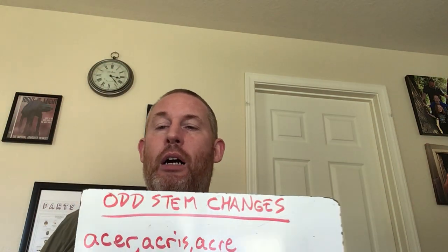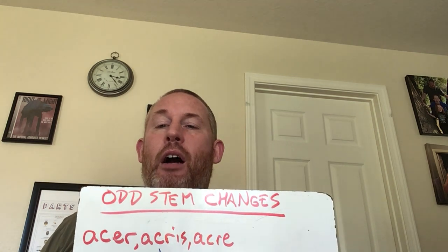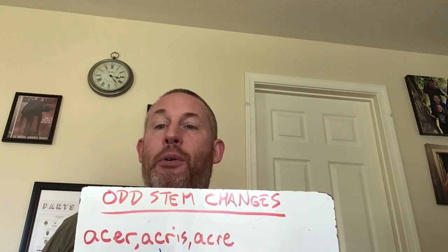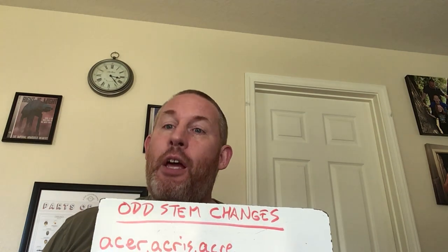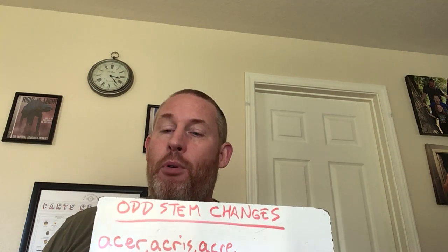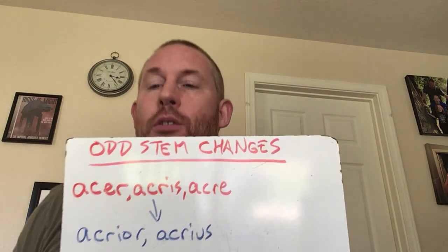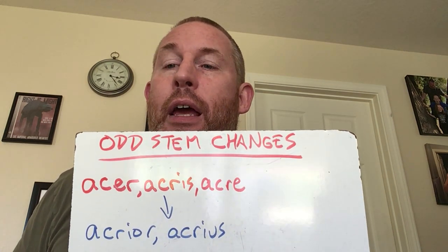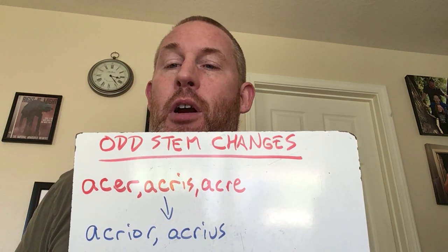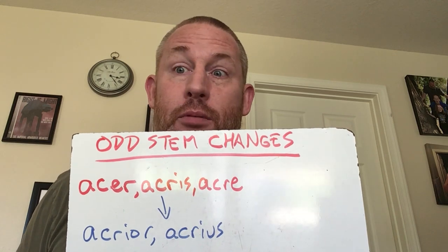Now sometimes in doing that, you're going to run into some weird stem changes. So you've got a word like acer, acris, acre — it's a three-termination adjective of the third declension, means sharp or bitter. You go to the second part, acris, and it's acrior or acrius. It just is. Sorry.